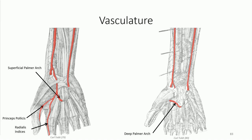The ulnar artery enters the hand under the palmar carpal ligament and passes lateral to the pisiform and hook of the hamate. It provides the main contribution to the superficial palmar arch. Off of the palmar arch are a series of common digital arteries that project superiorly towards the webbing between each digit.